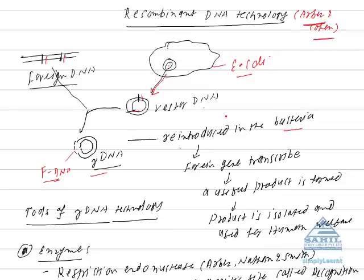This is basic stuff involving DNA recombinant technology process. Now what are tools of DNA recombinant technology? The most important tool used in this technology is enzymes. Several enzymes are used.